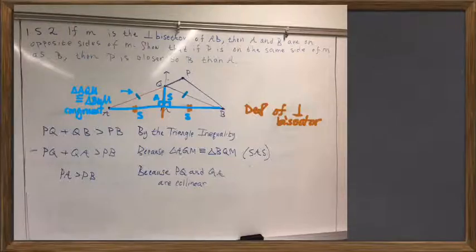So that's the equidistance result that we also used in the concurrency proof. Therefore, AQ is equal to BQ. So that's a result that seems pretty important, because it comes back to help us again later on, too.